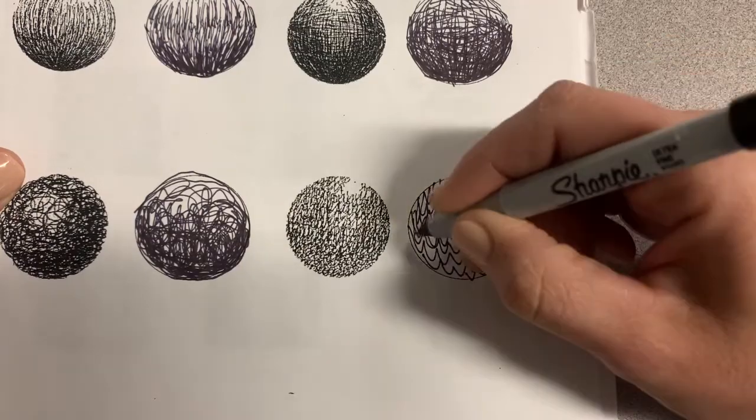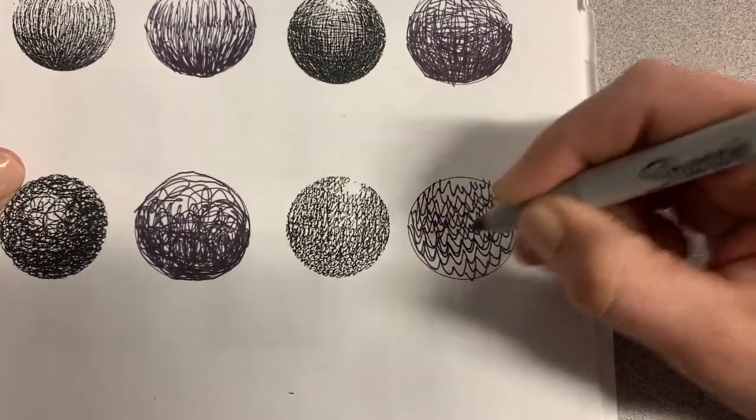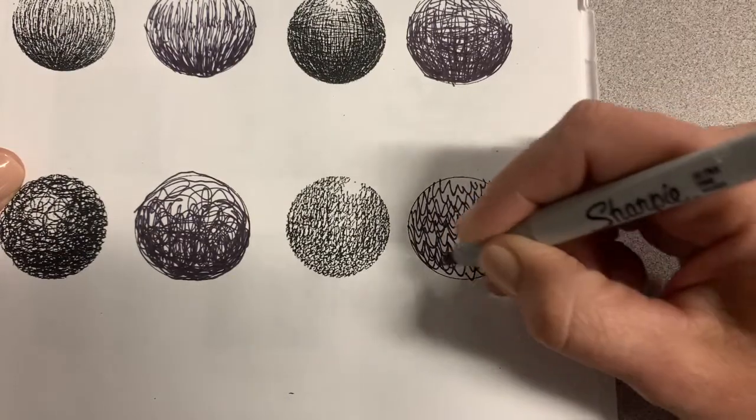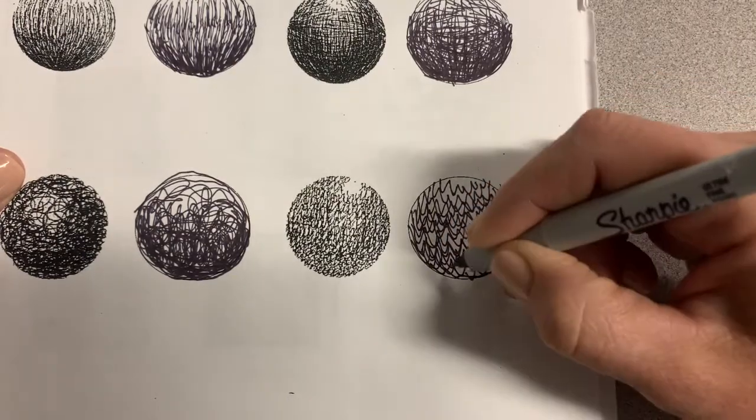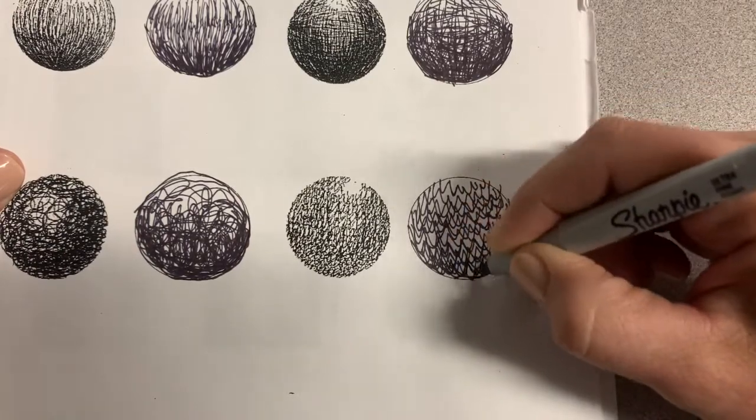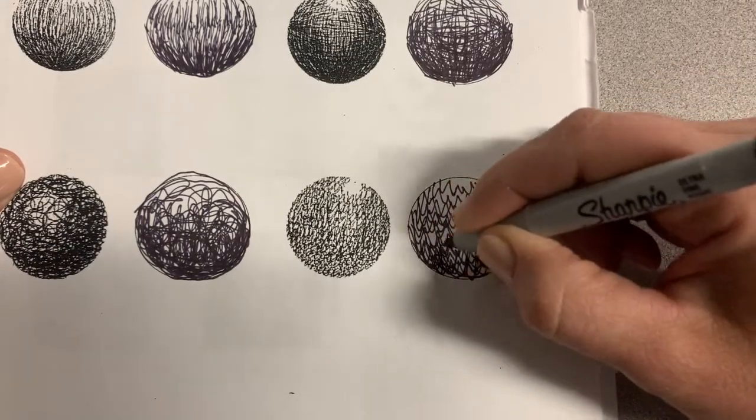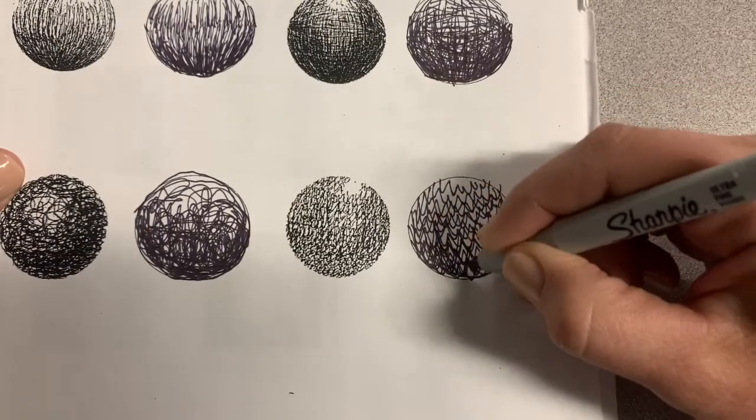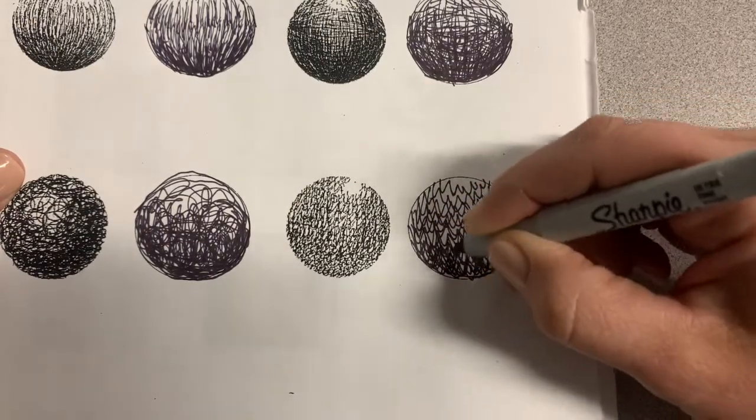After I've filled the circle with the initial wavy line pattern, I'm going to then go in and layer more wavy line patterns on top of the original to add value. In the end, I want to have a darker value at the bottom with more layers of wavy lines and a lighter value at the top with less layers of wavy lines.